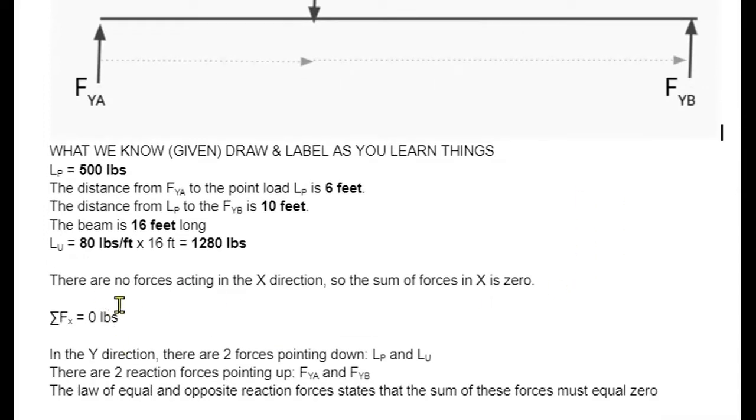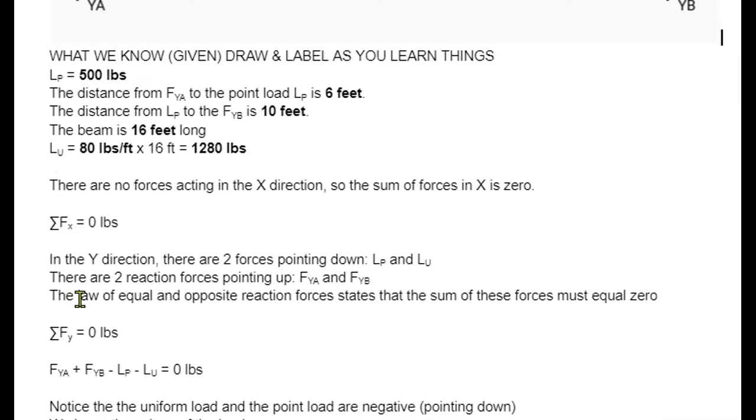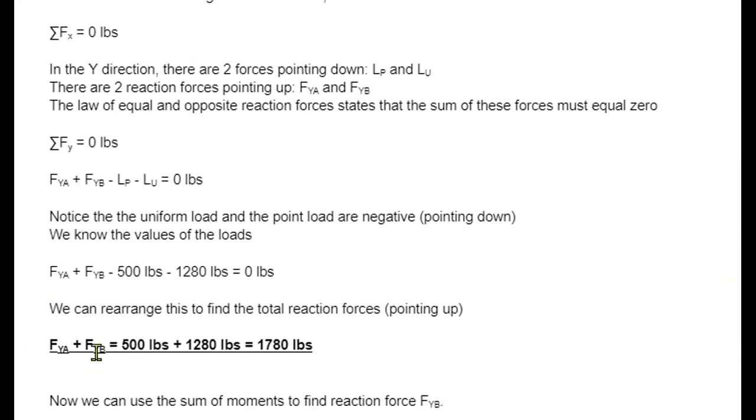If we add all the forces together... I need to clarify why we do this. This beam is not moving. It's static, and it's in equilibrium, and that means there's no motion. So if there's no motion, the sum of your forces has to equal zero, and the sum of your moments also has to equal zero. You can think about Newton's third law. For every action force, there's an equal and opposite reaction force. In the y direction, there are two forces pointing down - the point load and the uniform load. And there are two reaction forces pointing up, the one at point A and the one at point B. Using Newton's third law, we know that the total of those forces have to equal zero.